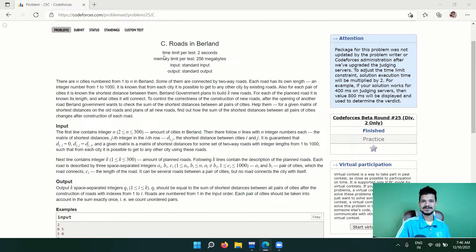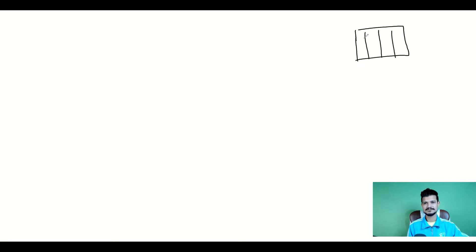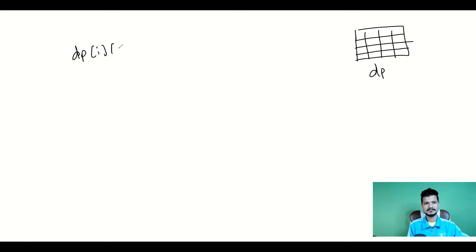Let's go ahead and solve this problem and see how we'll code it. Basically, we are already given our distance array — I'm calling it a dp array of size n×n. Here dp[i][j] equals the shortest distance between nodes i and j.